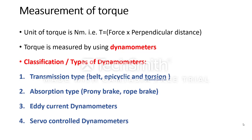As we know, we are in the part of measurement of torque. The unit of torque is Newton meter, and torque is measured by using various types of dynamometers. Here is the classification and the types of dynamometers.